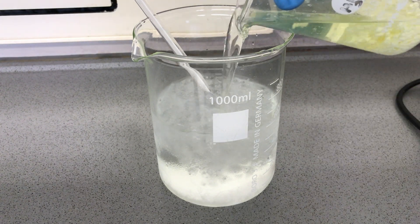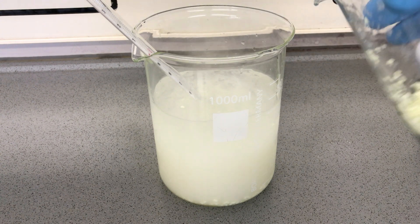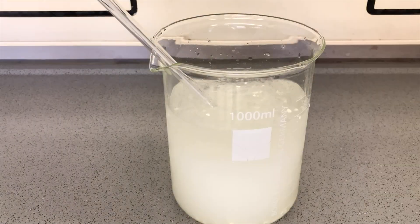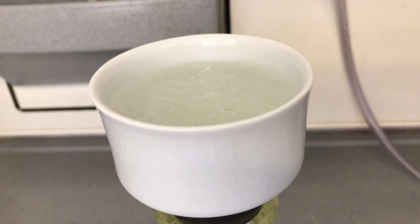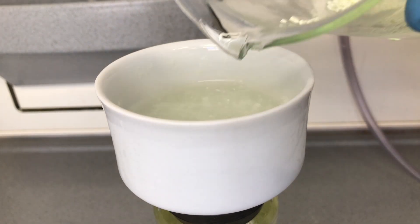Once the nitration was finished, it was time to isolate the product. Everything was added to a beaker containing ice water. The beaker still containing some product was rinsed using distilled water. A vacuum filtration was quickly performed and the product was rinsed with a lot of distilled water.